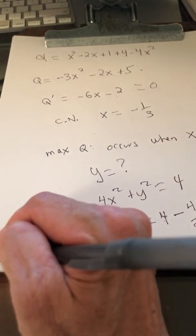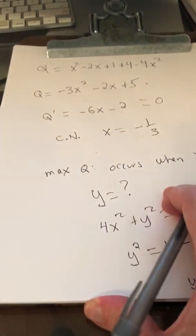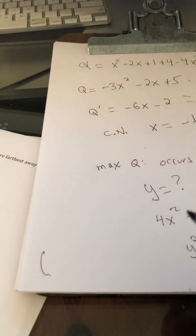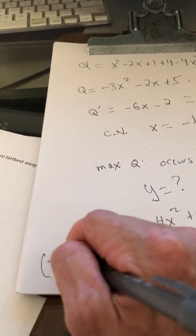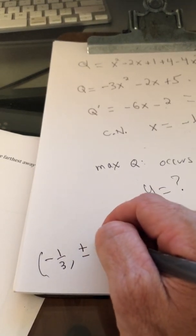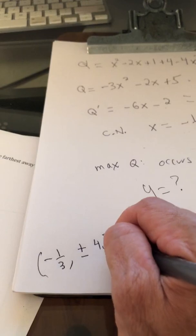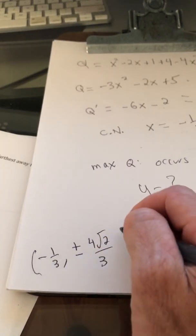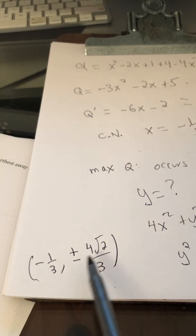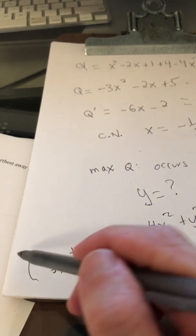So the two points that are furthest away from the point (1, 0) on this ellipse are (negative 1/3, positive 4 times the square root of 2 over 3) and (negative 1/3, negative 4 times the square root of 2 over 3).